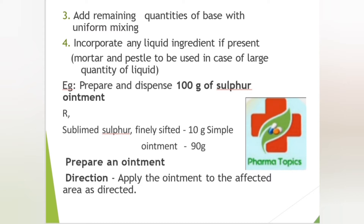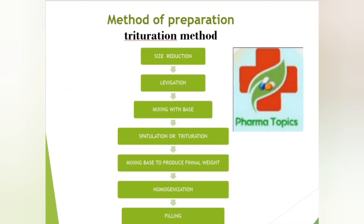To prepare sulfur ointment: sift sulfur and place a small amount of simple ointment on the ointment slab. Add sulfur onto the slab and mix until a homogeneous product is formed. Transfer into an ointment container and apply the label. This is the sulfur ointment preparation.